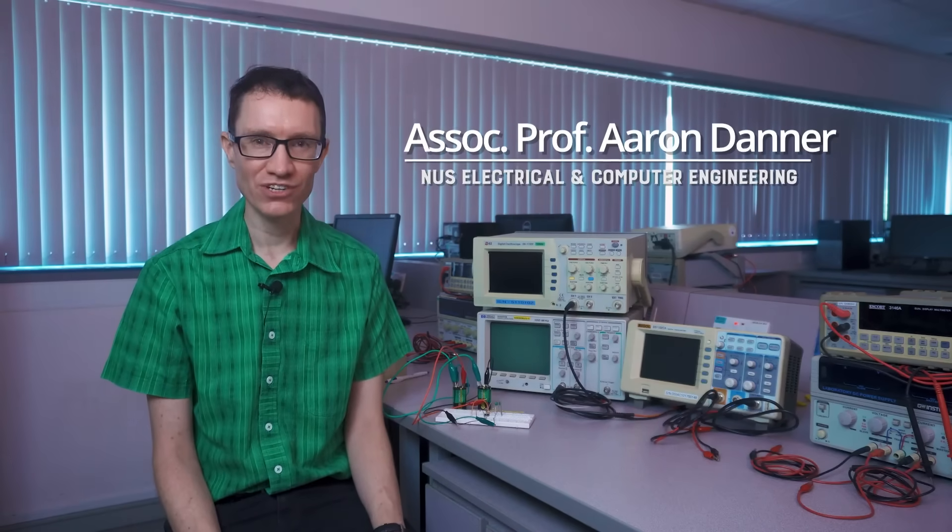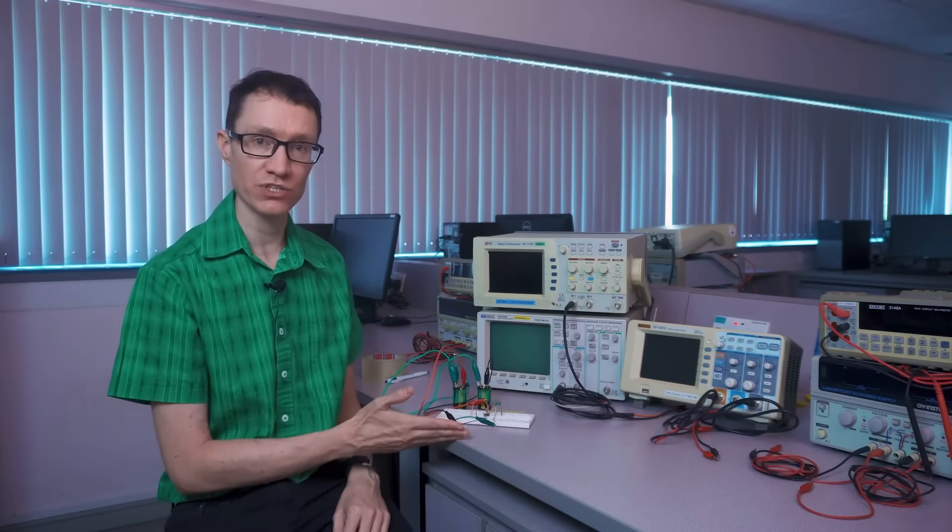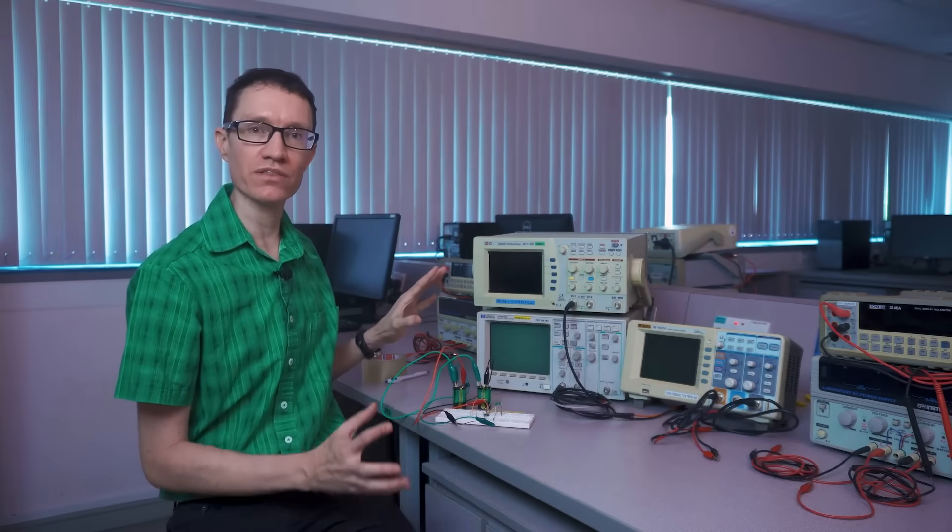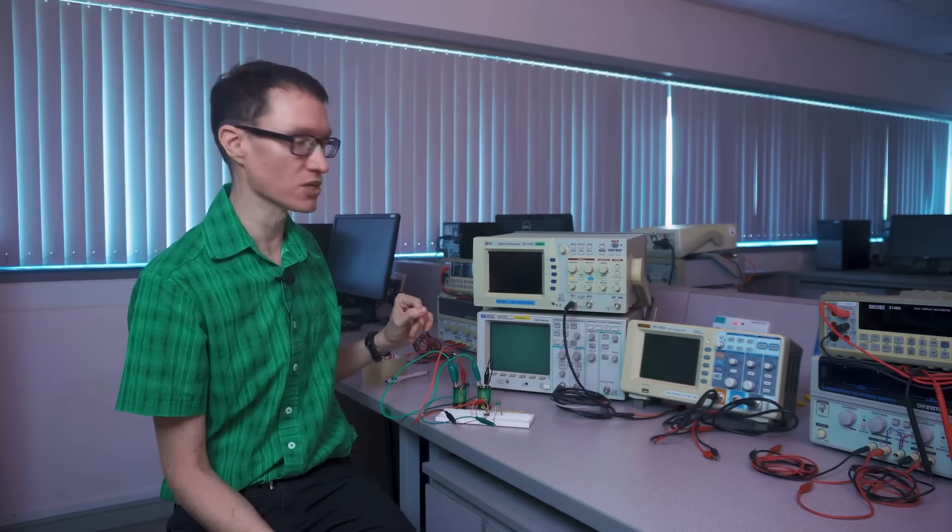In this video, we're going to take a closer look at the oscilloscope, and we're going to take some measurements of an actual circuit here. This circuit right here is a battery-powered circuit that outputs a time-varying signal. We're going to be measuring it with three different oscilloscopes so we can become familiar with the common features on all oscilloscopes.